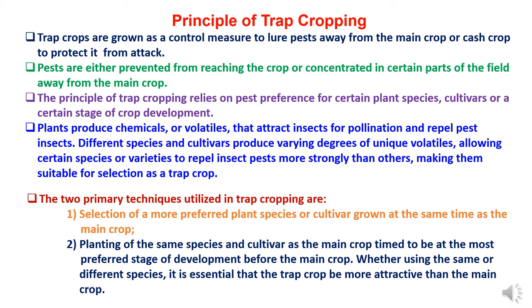Trap crops produce chemicals or volatiles that attract insects for pollination and repel pest insects. Different species and cultivars produce varying degrees of unique volatiles, allowing certain species or varieties to repel insect pests more strongly than others, making them suitable for selection as a trap crop.